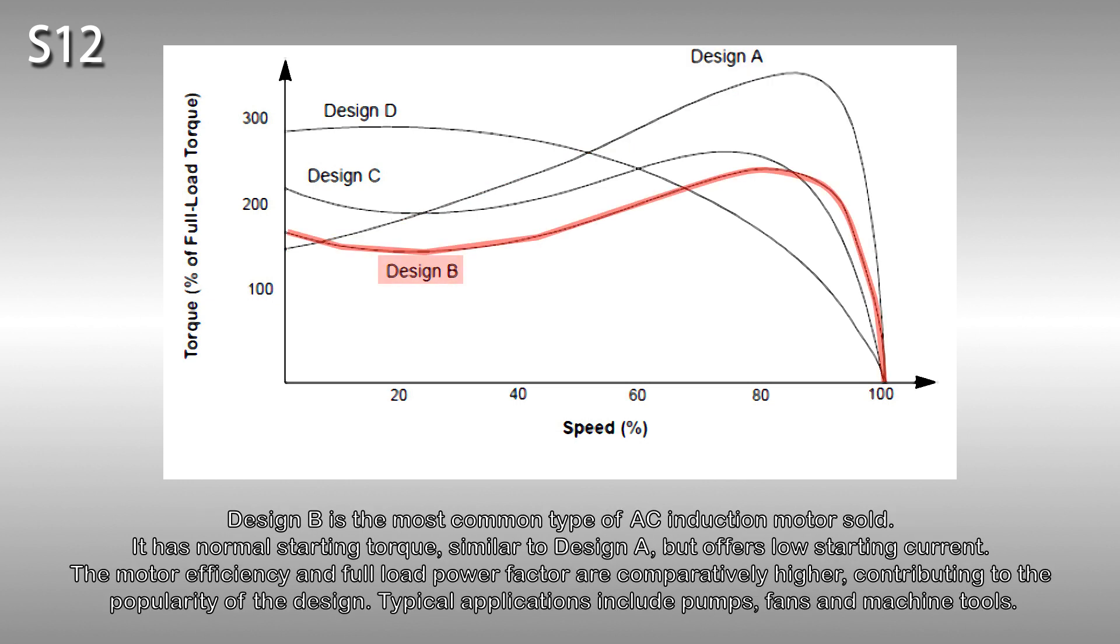Design B is the most common type of AC induction motor sold. It has normal starting torque, similar to design A, but offers low starting current. The motor efficiency and full load power factor are comparatively higher, contributing to the popularity of the design. Typical applications include pumps, fans and machine tools.